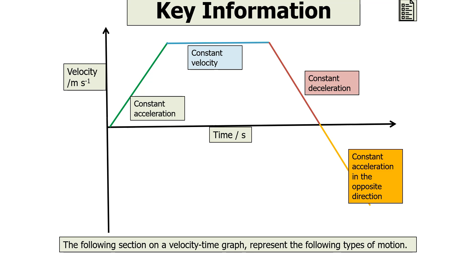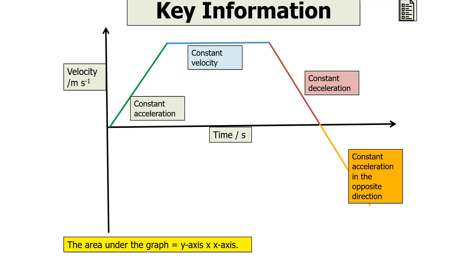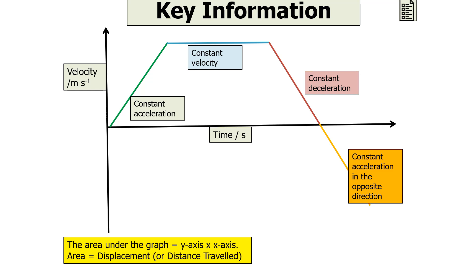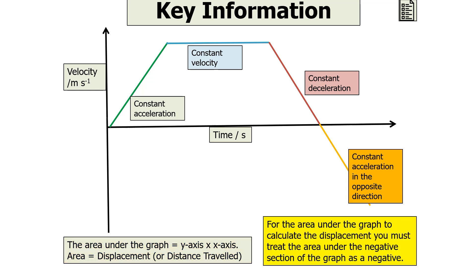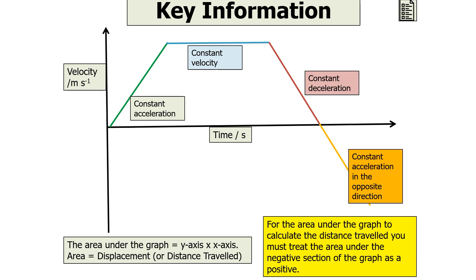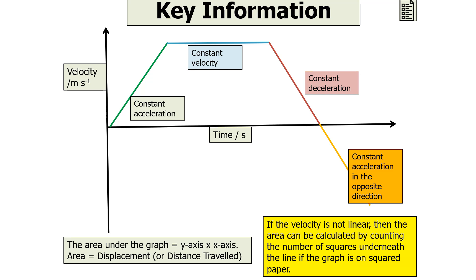Here are different sections you could see on your velocity time graph. It's also important to note that the area under the graph is the y-axis multiplied by the x-axis — in this case, velocity multiplied by time — which gives us either the displacement or the distance travelled. To calculate displacement, treat the area under any negative section of the graph as negative. To calculate distance travelled, treat the area under any negative section as positive. If the velocity is not linear, the area under the line can be counted by counting squares on squared paper, or by splitting the area into different shapes, calculating each area, and summing the values.